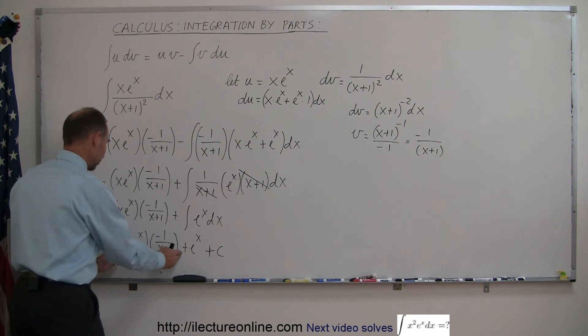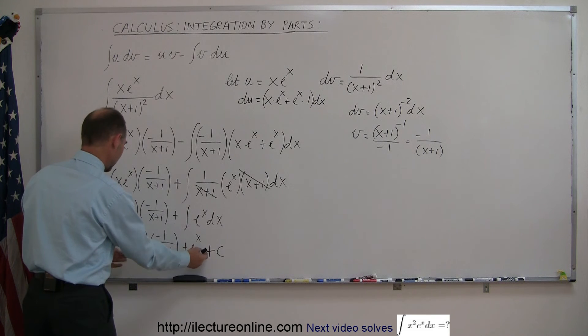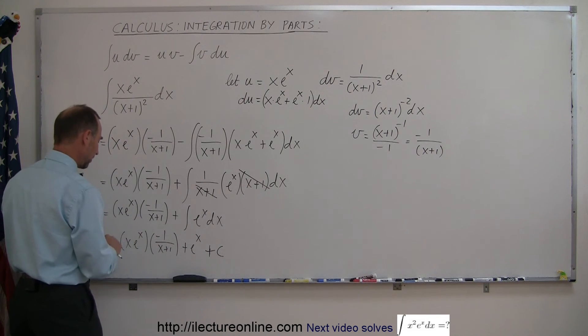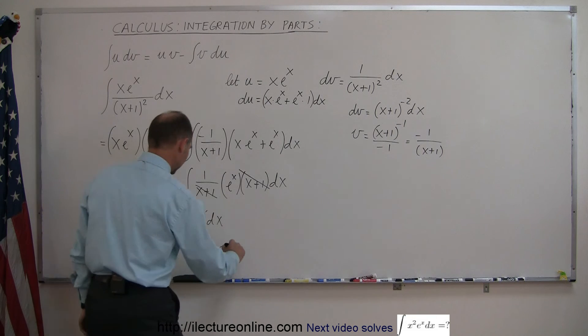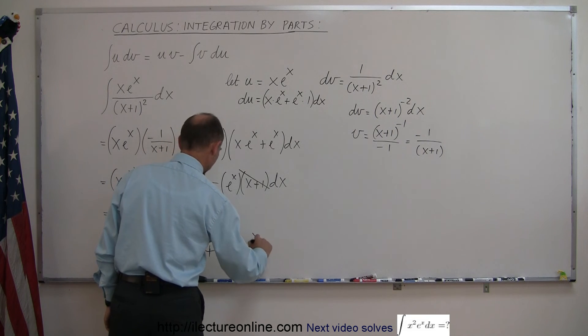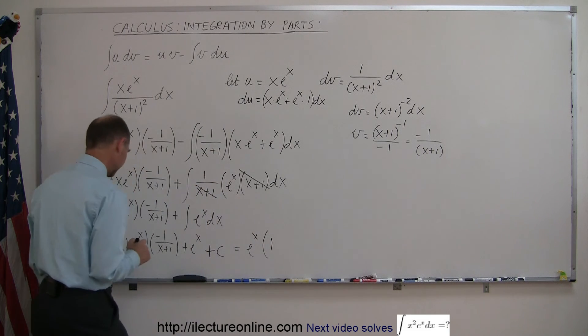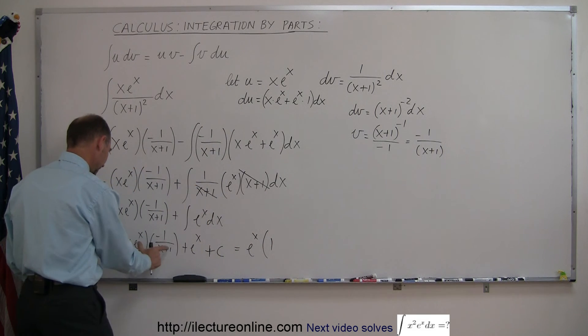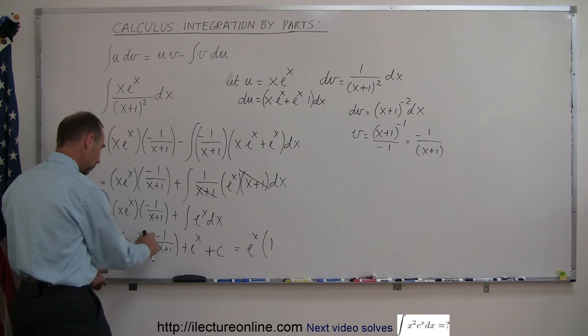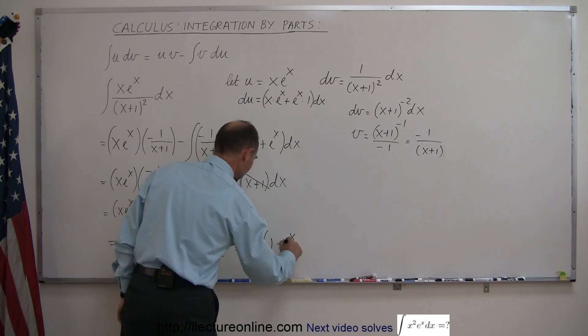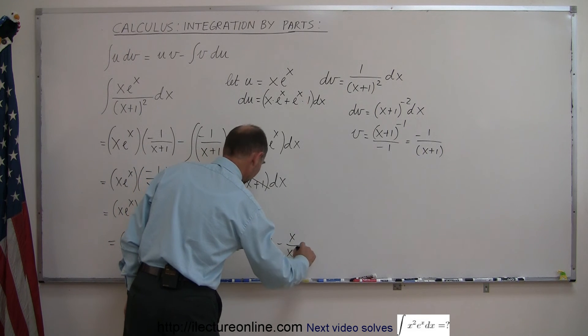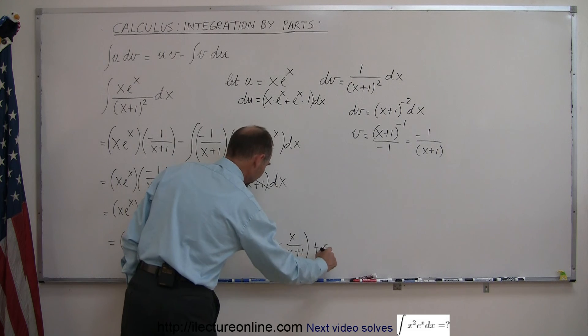And then for good measure, we have multiple terms that we can factor out an e to the x from, we can multiply this times that, and we can rearrange it, so this can be written as e to the x times the 1 from this factor right there. And then when we have e to the x removed, we have minus x over x plus 1 plus a constant of integration.